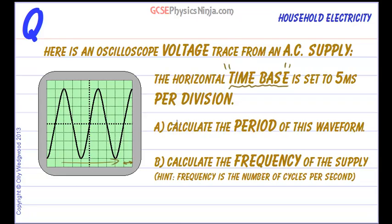Part A is to calculate the period of this waveform. Now the period of a waveform is the time taken for one complete oscillation.